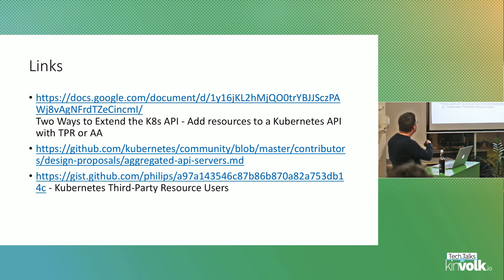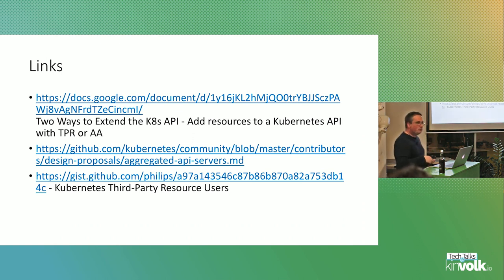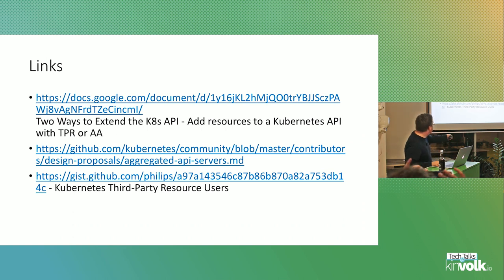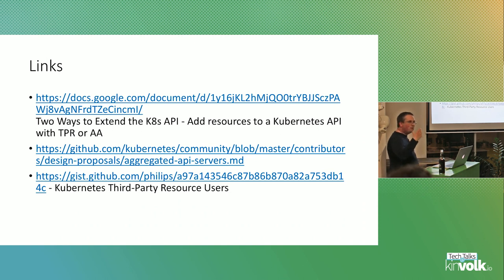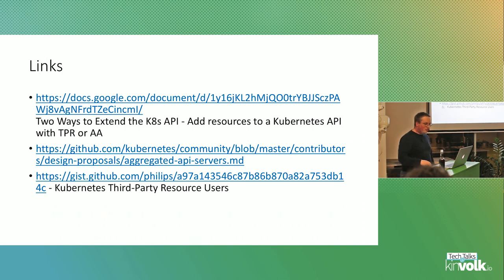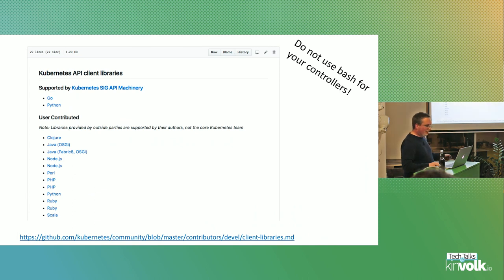Once it's working you can say 'kubectl get flanders' and get your flanders, create them, and so on. You have admission and validation — all the nice things you want for those objects. They look like API objects but are much more powerful. There is a detailed blog post comparing the two approaches — TPRs versus API aggregation. And as I said, don't use bash for production. Use the proper client libraries.